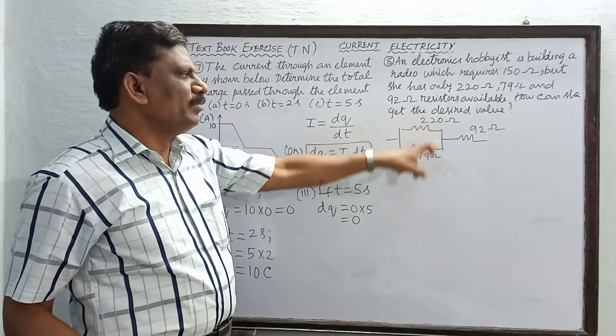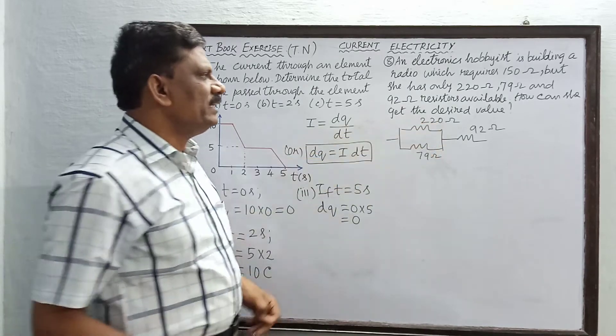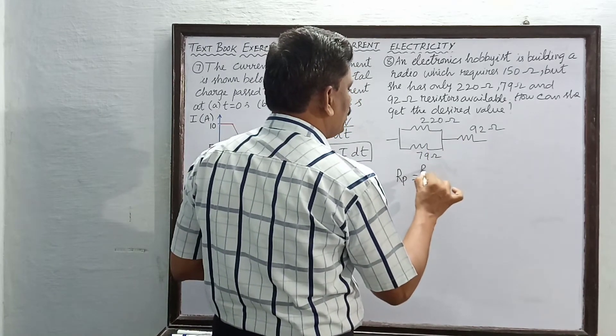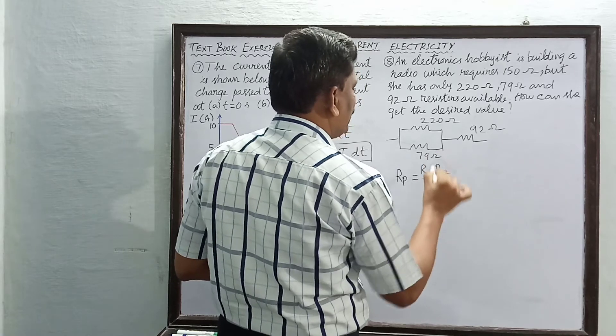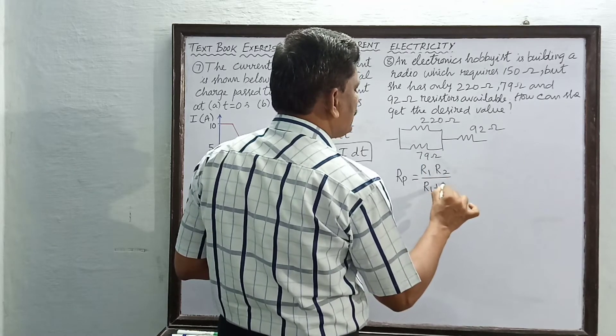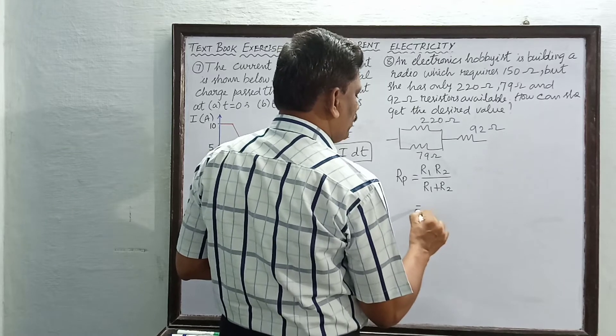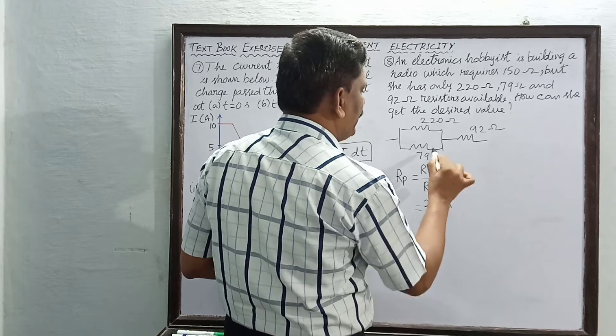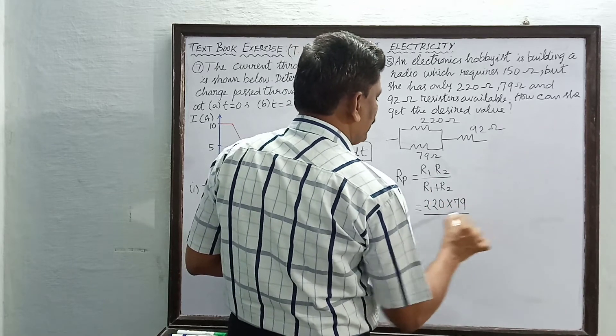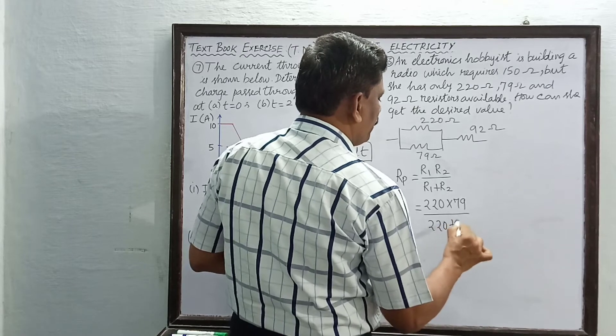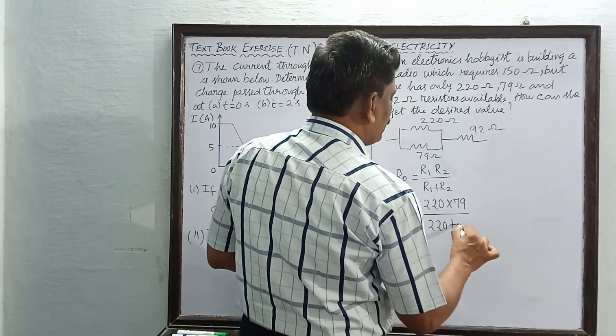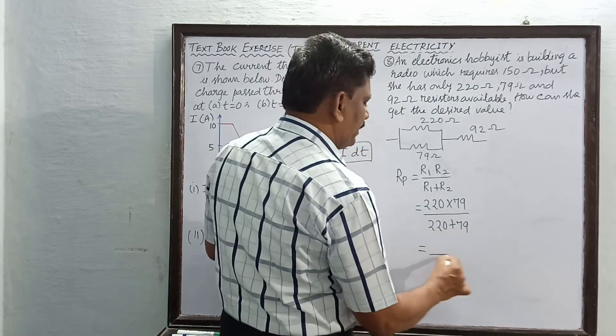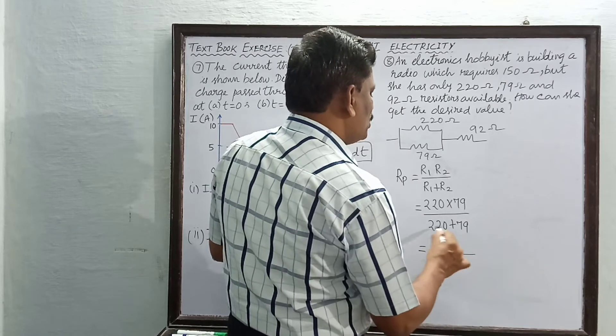Now the parallel combination of these two can be written as R parallel equals R1 into R2 divided by R1 plus R2. This is now equal to R1 into R2, 220 multiplied by 79, divided by 220 plus 79. The denominator is 220 plus 79 equals 299.